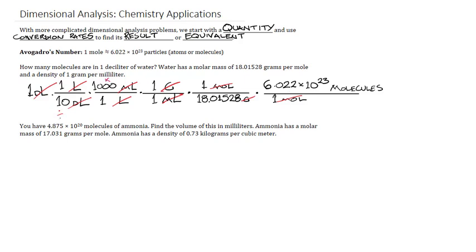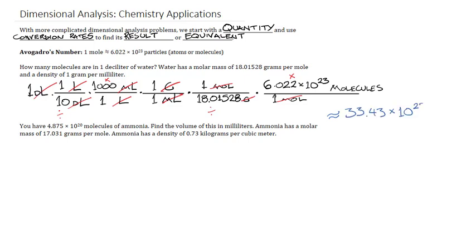What we're going to do is take 1, divide by 10, multiply by 1,000 — though since 1 gram equals 1 milliliter for water, you can skip that step entirely. We'll divide by 18.01528 and multiply by 6.022 times 10 to the 23rd. You should get an answer in scientific notation. Skip the 10 to the 23rd for now and attach it at the end. You get approximately 33.43 times 10 to the 23rd power molecules. To put this in proper scientific notation, move the decimal one place left and add one to the exponent: 3.343 times 10 to the 24th power molecules.